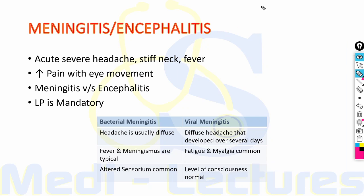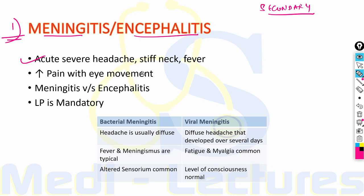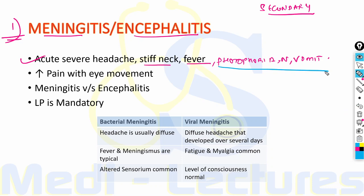Now let's discuss secondary headache causes. The first topic is meningitis and encephalitis. These present with acute severe headache with stiff neck and fever, along with photophobia, nausea and vomiting. Since these three features are also present in migraine, meningitis should be differentiated from migraine. In meningitis, patients complain of increased pain with eye movement.